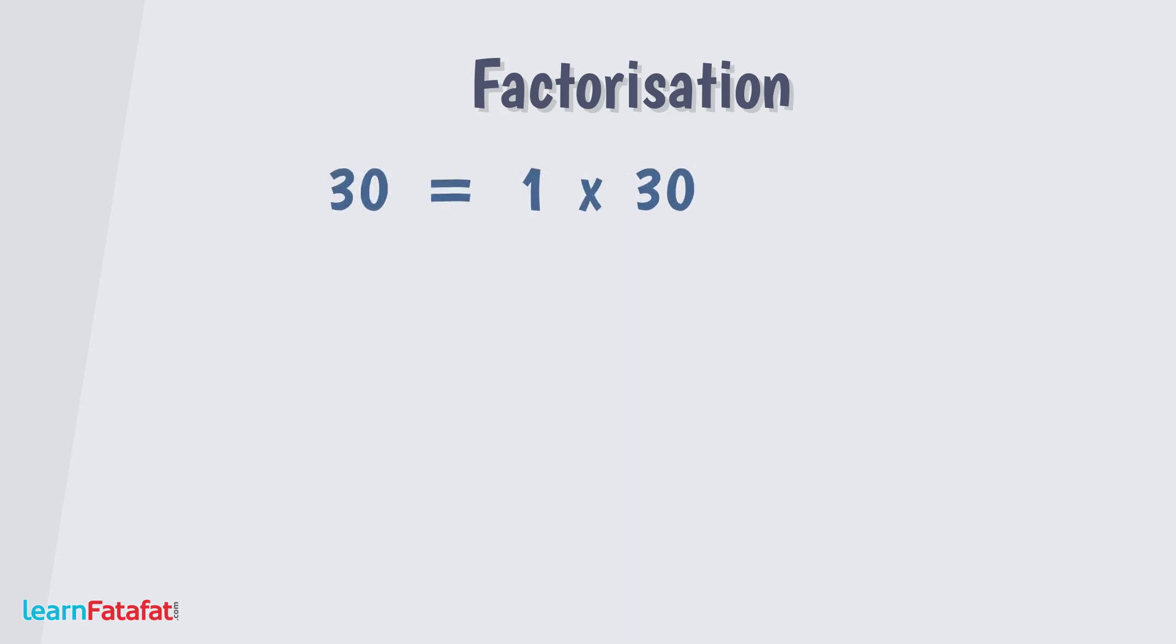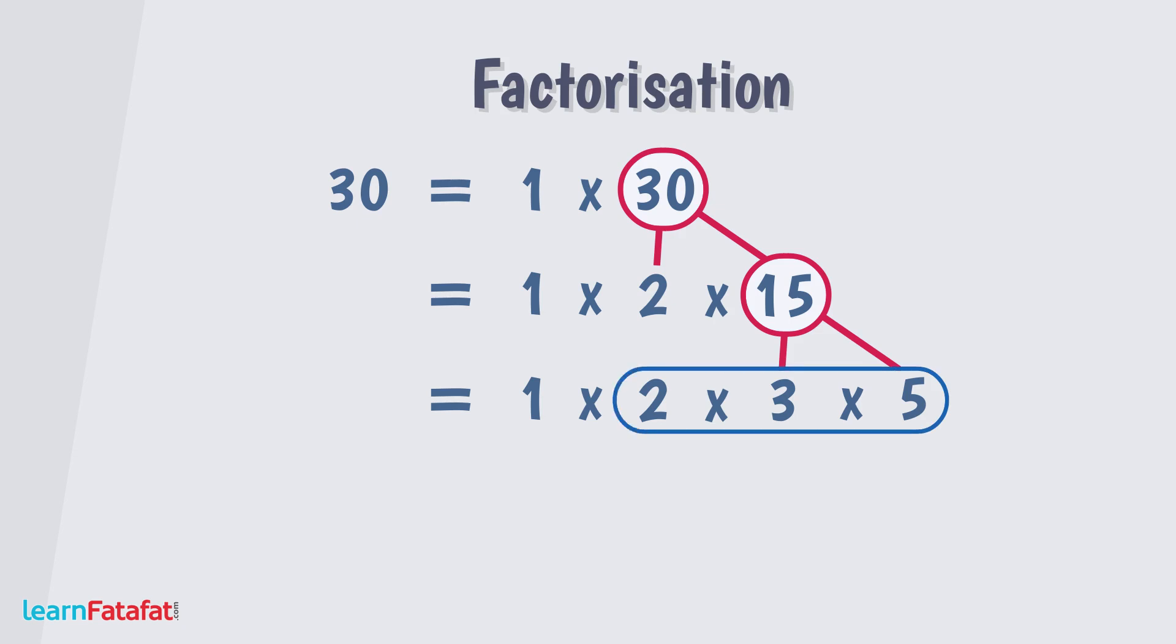We can further break 30 as product of these numbers. Further, these numbers can also be broken as product of these two numbers. After this, we cannot do further factorization as all of these numbers except 1 are prime numbers.